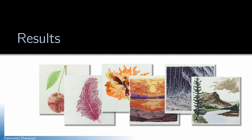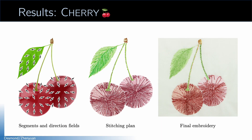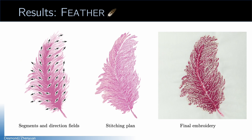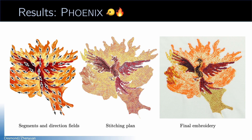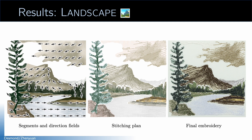We used our method to design a few patterns from images and made them on our embroidery machine. I'll show you the segments and direction fields on the left used to generate a stitching pattern in the middle, and a photo of the embroidery we made on the right. In the first example, we segment the cherry by fruit, stem, and leaf — the directionality on the leaf gives a very nice texture in the final output. In the feather example, the direction field follows the feather so yarns go from the shaft to the edge, creating a special feather appearance. The Phoenix example is more complex with 12 segments, and we run our pipeline for each one with a fairly nice result. In the landscape example, there is a nice color transition on the cloud and the mountain, and you can also see the effect of directionality on the mountain shadow.